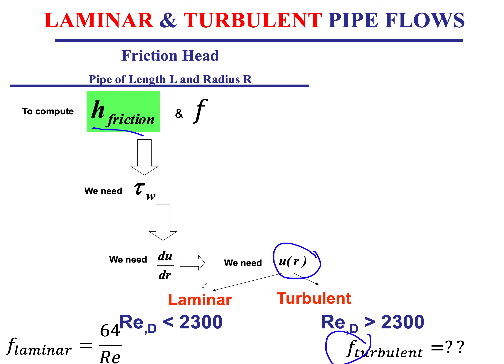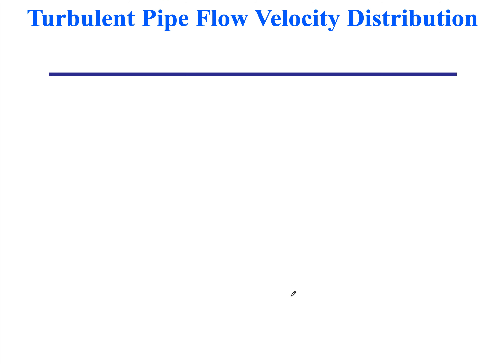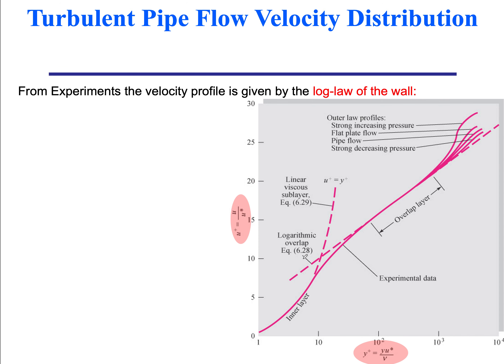Because of the lack of a closed-form analytical solution for fully turbulent pipe flow, we rely on scaling arguments as well as empirical data from experiments or numerical simulations based on the Navier-Stokes equation. We will jump directly to the velocity distribution as found through scaling arguments and empirical means.